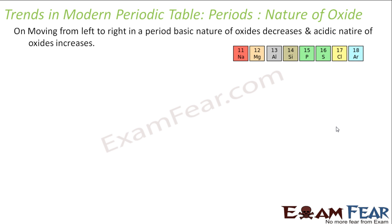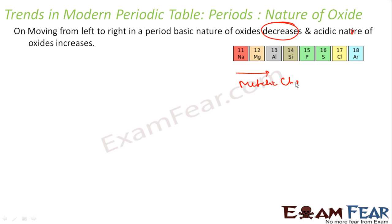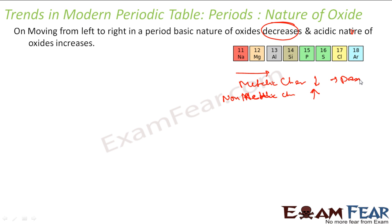If you talk about the nature of oxides, the basic nature of oxides decreases and the acidic nature of oxides increases. This is because metallic character decreases and non-metallic character increases as you go across the period. Metallic character gives you basic oxides, so basic oxides decrease. Non-metallic character gives you acidic oxides, so acidic oxides increase. Similar to the metallic and non-metallic trend, we have the basic and acidic oxide trend.